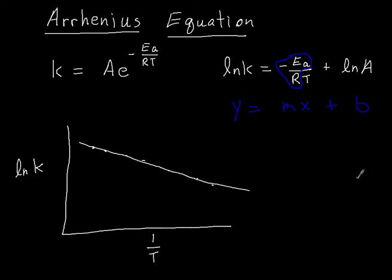The important thing to remember here is that M is the slope of the line. And we have determined slope to be equal to negative EA over R. So if you can graph the natural log of K versus the inverse of T on a graph and determine the slope of that line, then what you can solve for is the activation energy of the reaction. You can actually determine what is the activation energy of this chemical reaction using the Arrhenius equation.